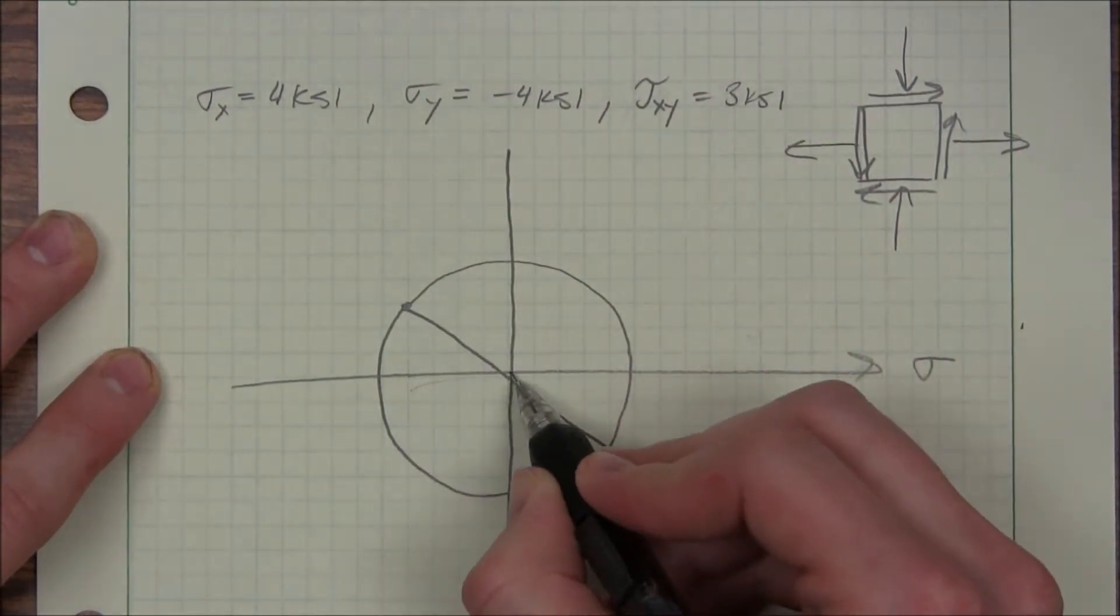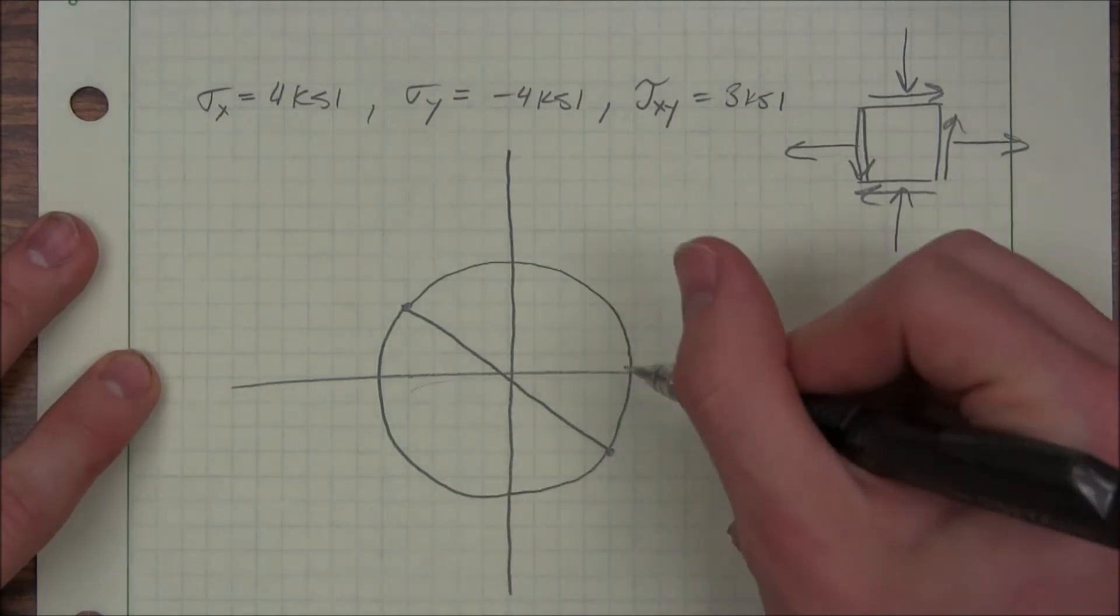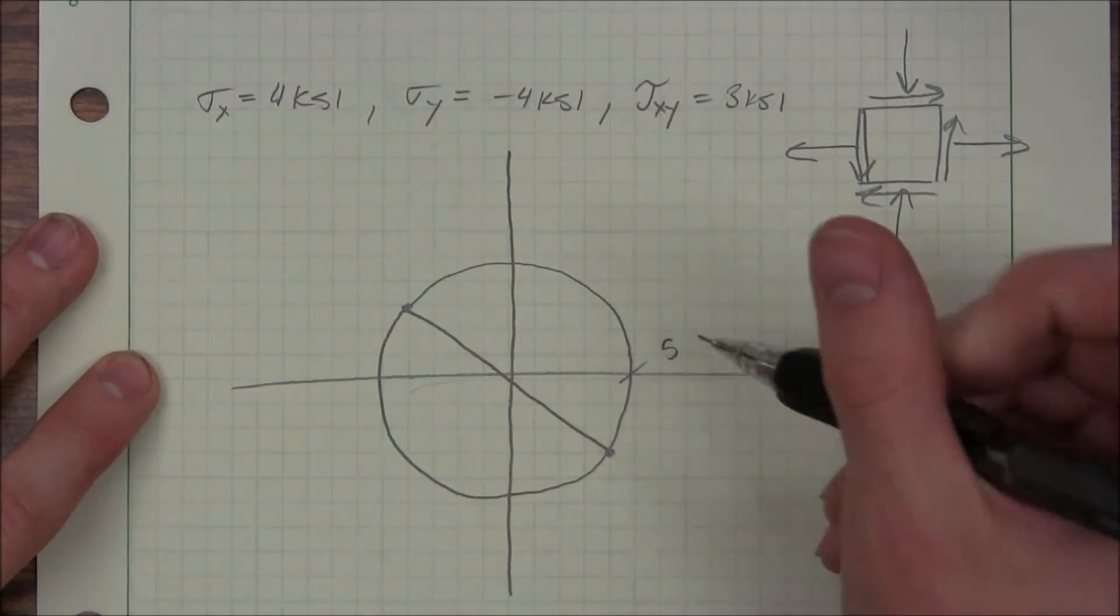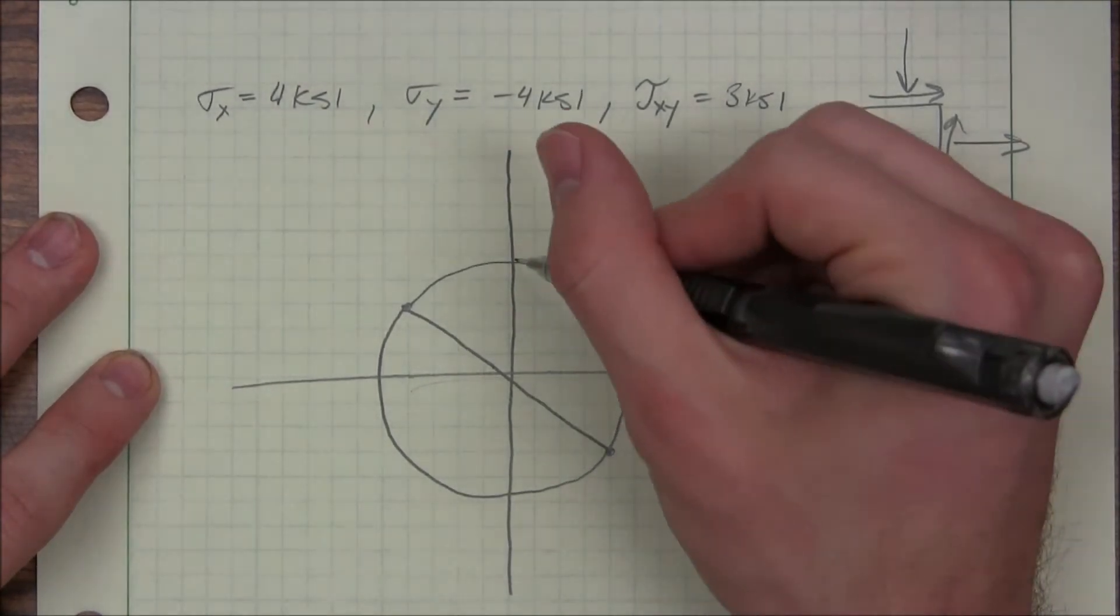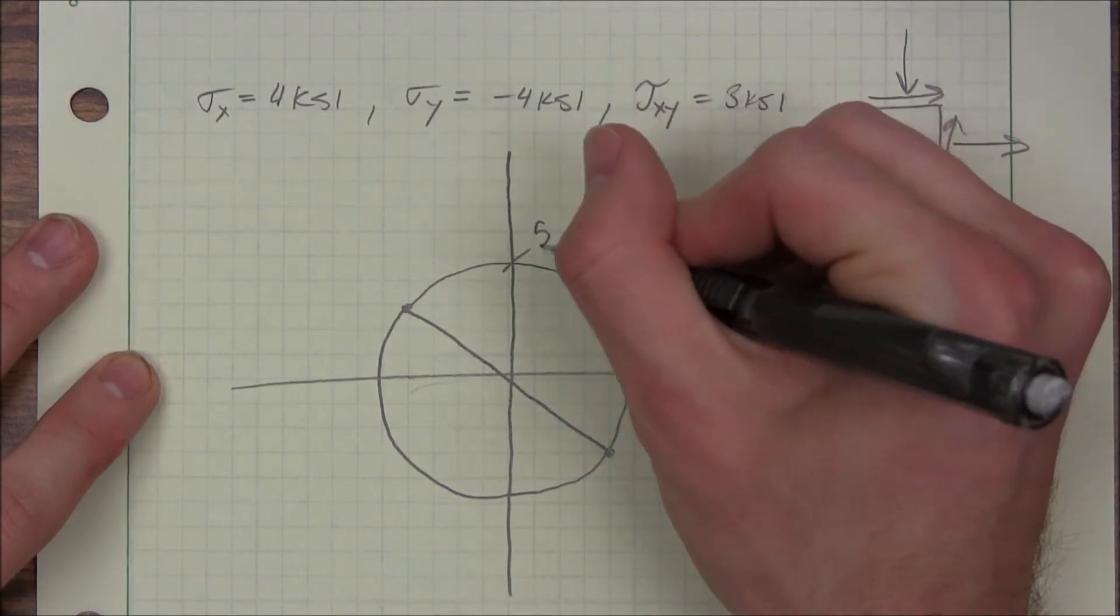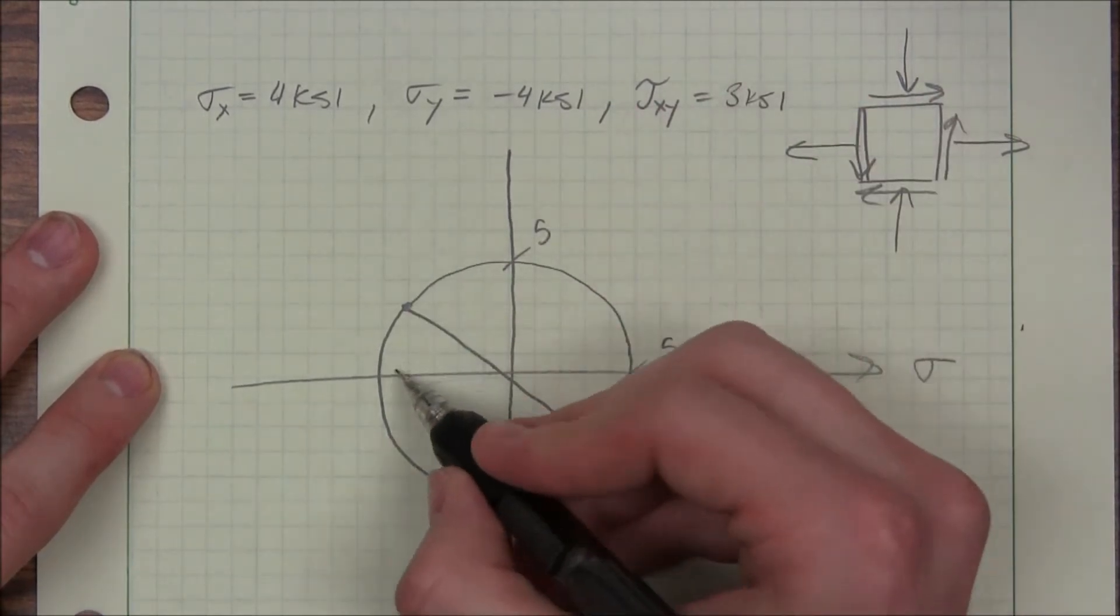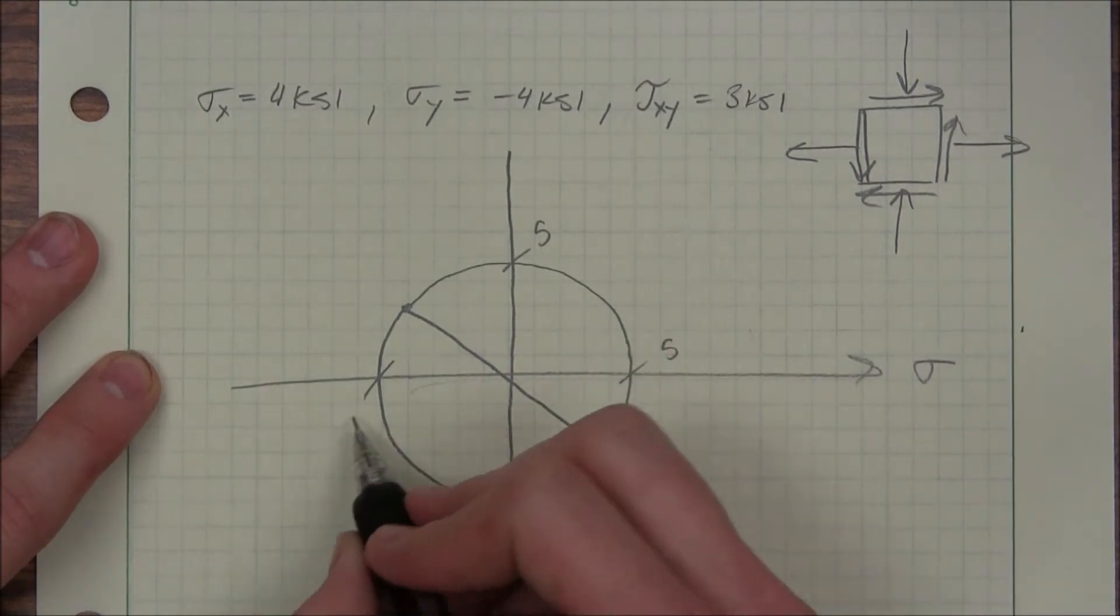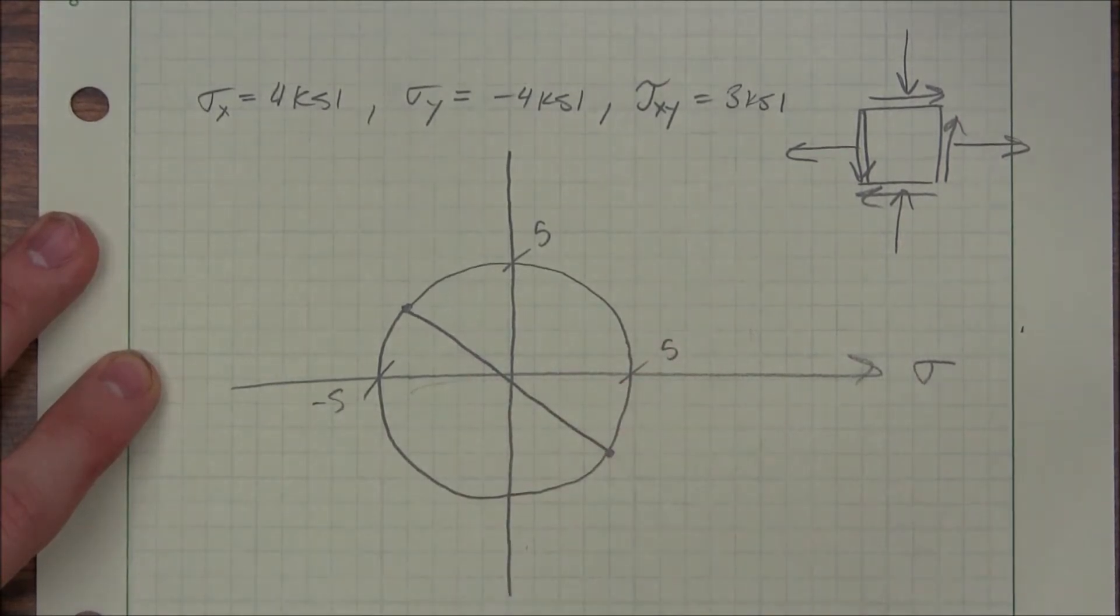Now, given that this is a 3-4-5 triangle, I could easily tell you right off the bat the maximum stress is going to be 5 KSI. The maximum shear stress is also going to be 5. My minimum normal stress is going to be negative 5 KSI.